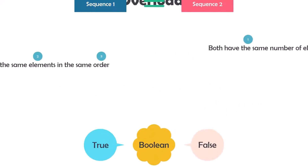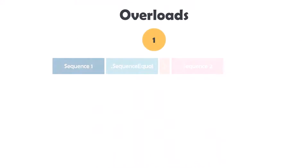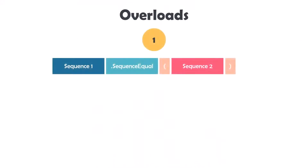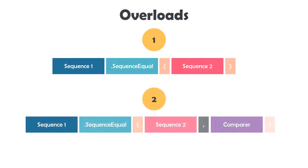There are two overloads for this operator. The first one has both sequences with the operator between them. The second overload is also the same but here we also have a comparer on the right side. I will show you what each overload means and how to use them later.